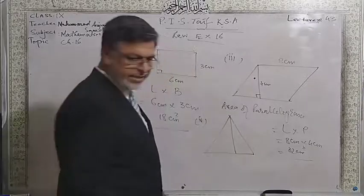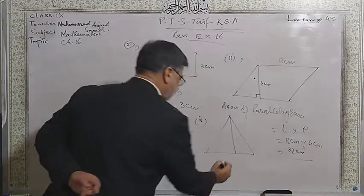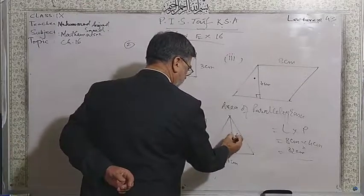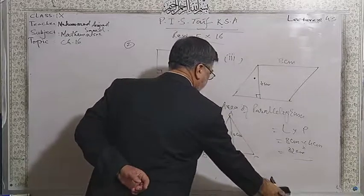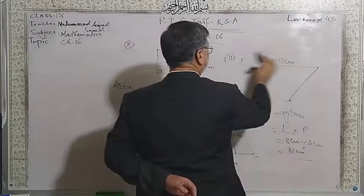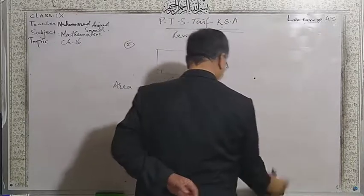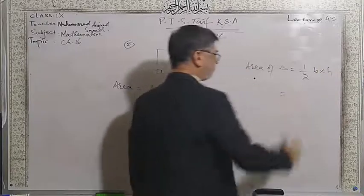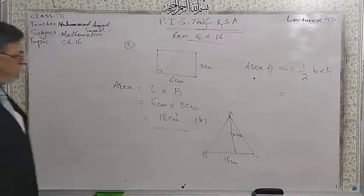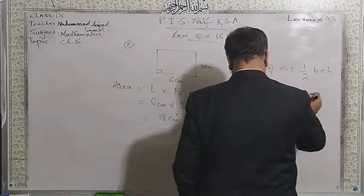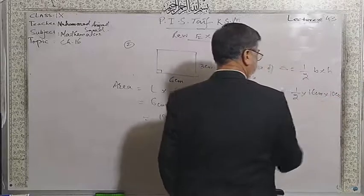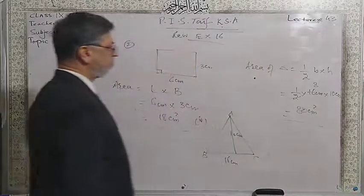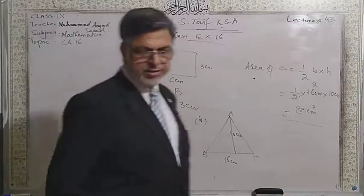In part number 4, we have a triangle with base 16 cm and height 10 cm. Area of a triangle is half times base times height: ½ × 16 × 10 = 80 cm². Yes, that is your answer, dear students.